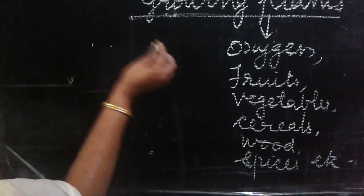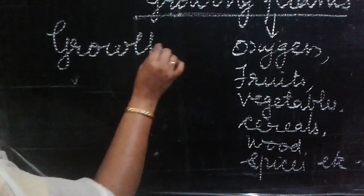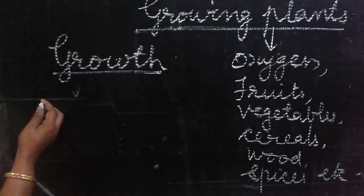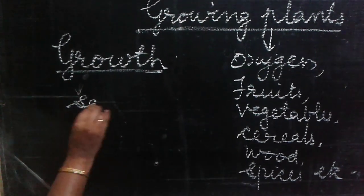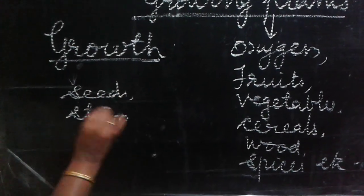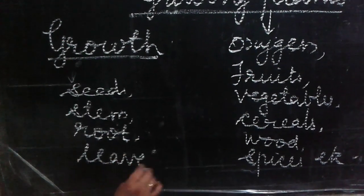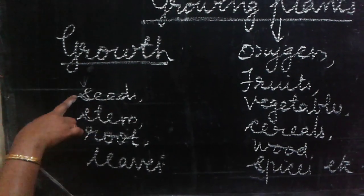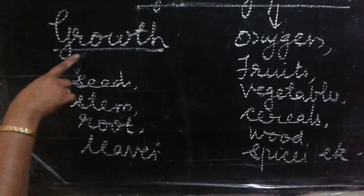Now, growth of the plants. How do the plants grow? We can grow plants through seeds, stem, root, leaves, etc. These are the vegetative parts of the plant. And the seed is the reproductive part. By these parts, we can grow the plants.